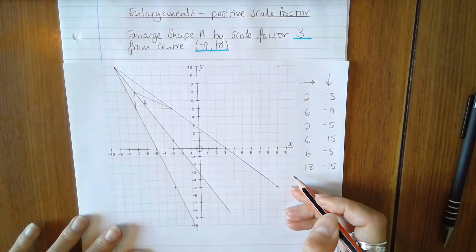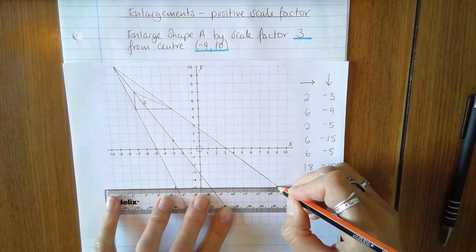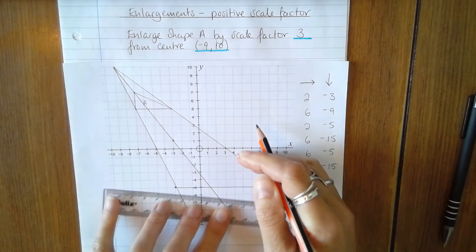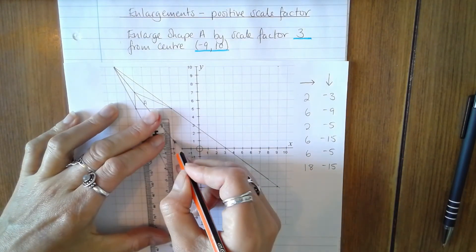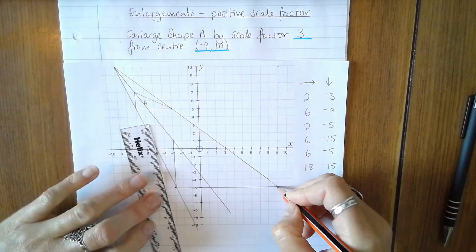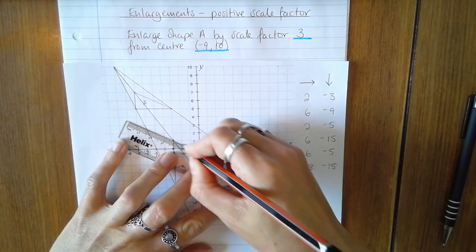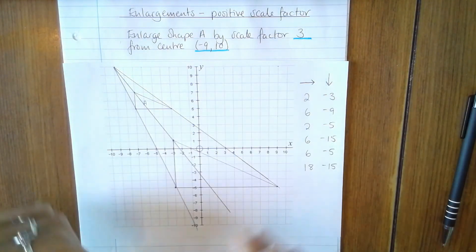So now I'll join up the vertices, and you should be able to see by eye that this triangle is an enlargement of the original triangle. But we can also measure.